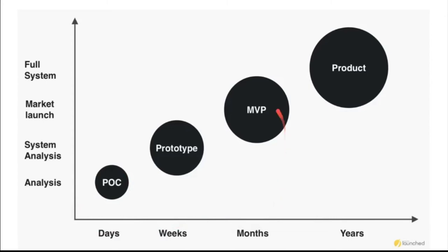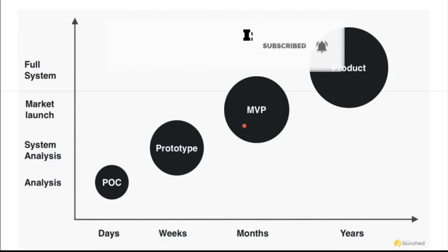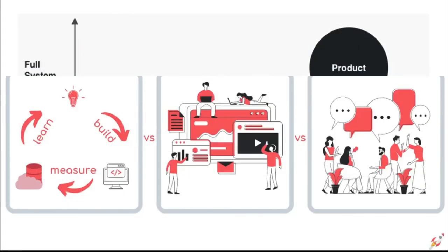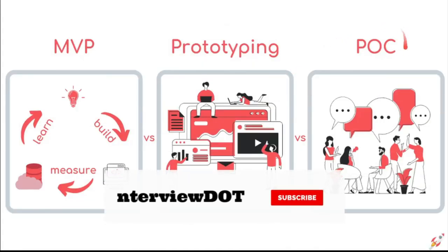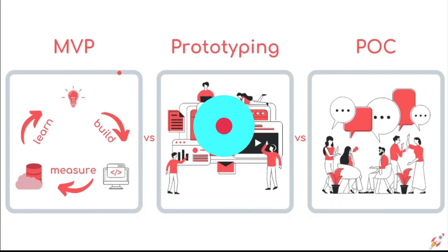Looking at the timeline comparison: POC takes usually only a few days and is used for analysis — please remember it's not a real product at all, it's just for analysis. Whereas MVP takes a few months and is used for preparing for the market launch, with core features to check whether customers are really interested in your product. Hope this information about POC and MVP is useful. All the best for your career. Thank you.